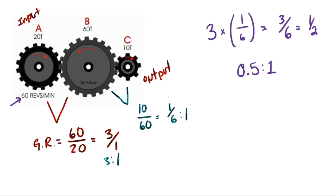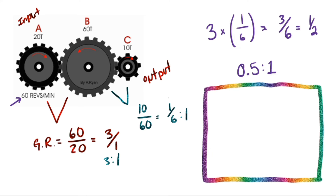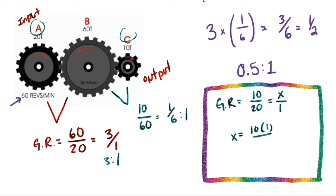Here's something interesting: what if we had just compared A to C directly? Gear ratio is 10 over 20, which equals 0.5 to 1. Same answer! So you don't have to calculate each step — you can just compare the size of the starting gear to the size of the final output gear to get the overall gear ratio.